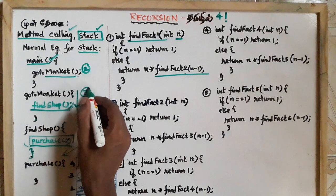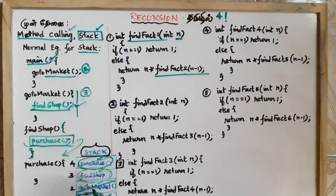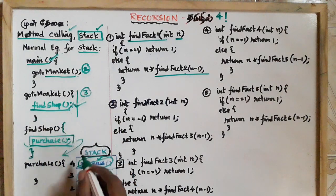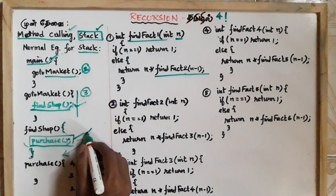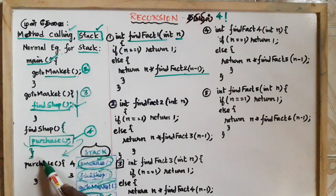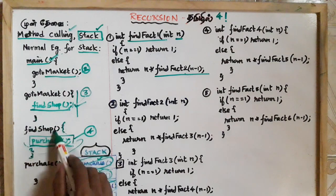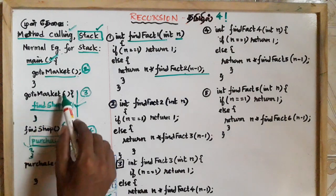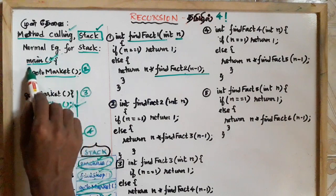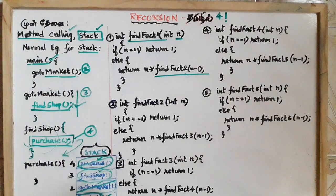The find-shop method is inside another method. That method is to purchase. If you purchase, you can find the fine shop. If you find the fine shop, you can go to market. If you find the main shop, you can go to market. This is the stack order flow.